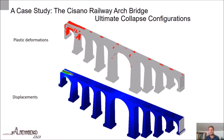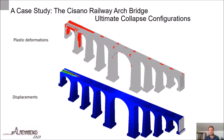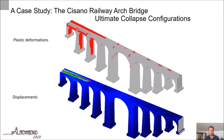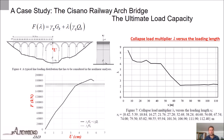Here we can see the results obtained by 20 nonlinear static analyses, performed for 20 different positions of the train load, which was modelled adopting a line load distribution. The ultimate collapse configurations are reported in sequence in terms of deformed shapes and plastic deformations. The values of the collapse load multipliers obtained from the 20 nonlinear static analyses are reported in the graph on the right, as a function of the loading length. The minimum value of the collapse load multiplier is equal to 2.16, corresponding to a line load distribution applied between abscissa 0 and abscissa 67.54 m. It is evident how the collapse load multiplier reduces when the loading distribution involves the central larger arch.